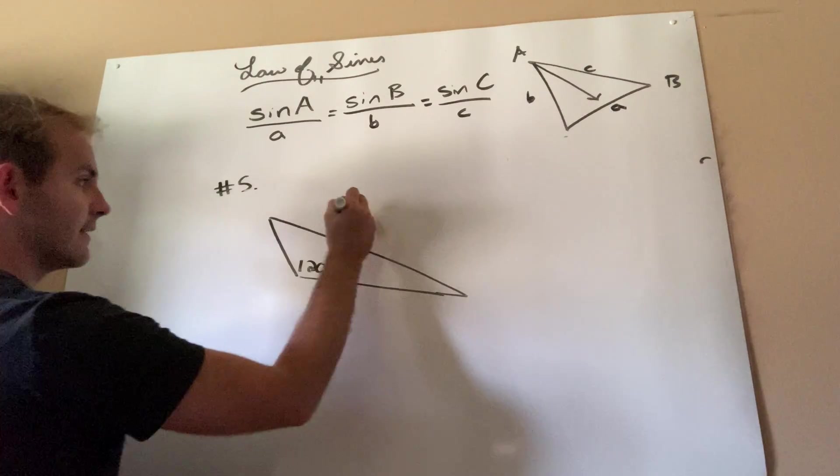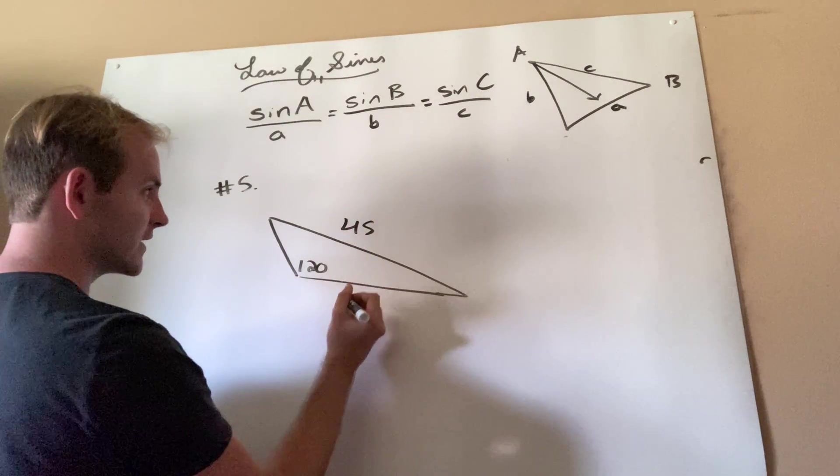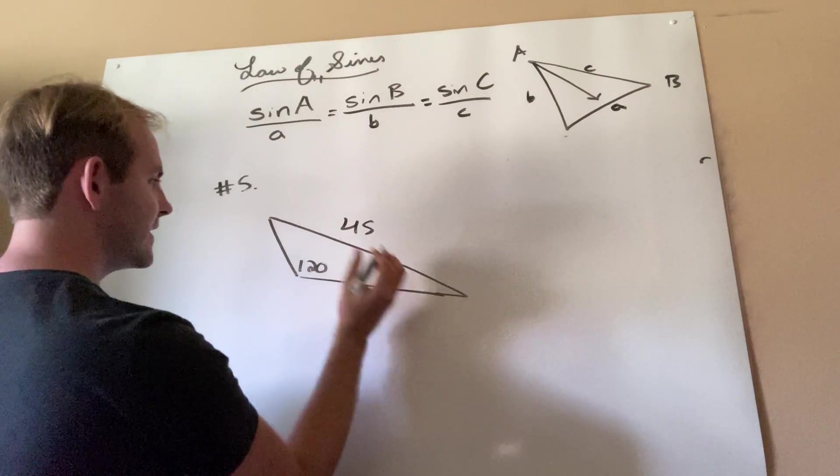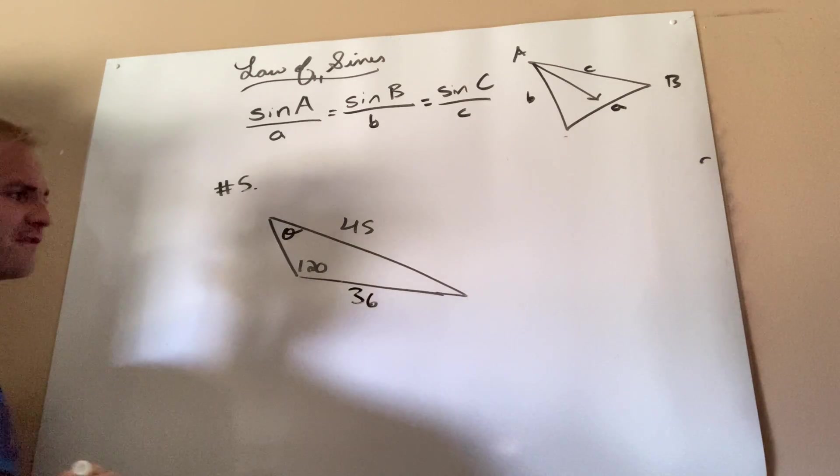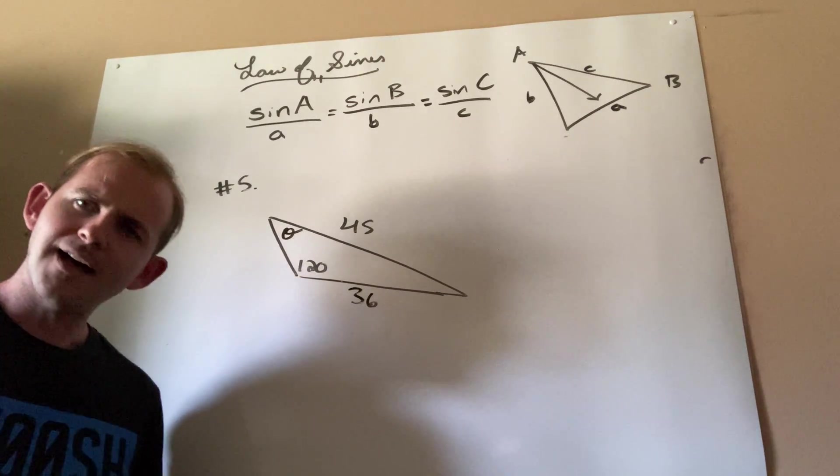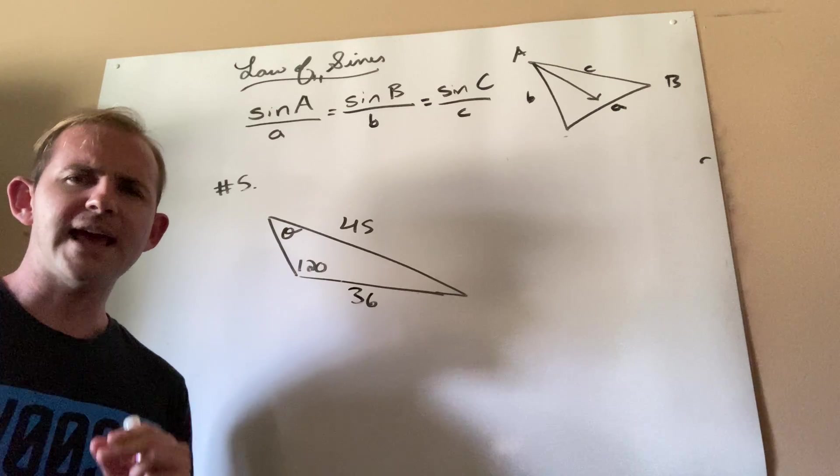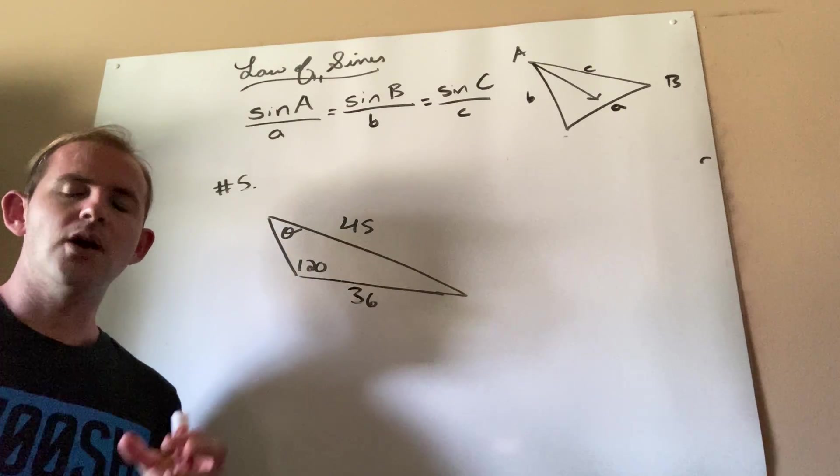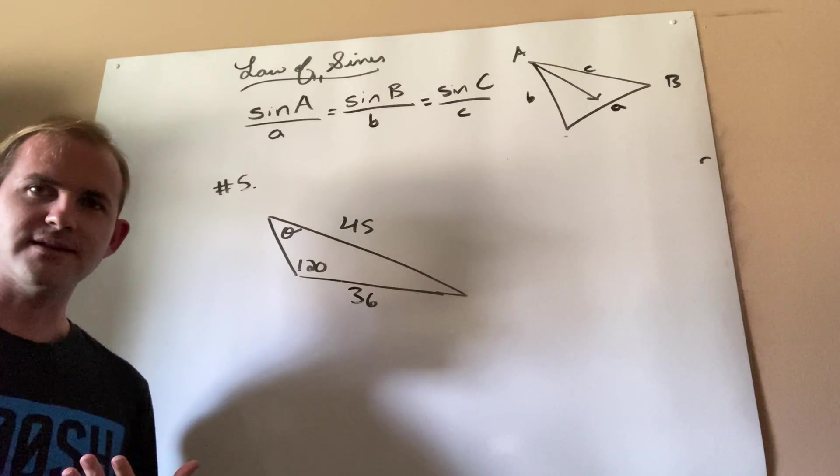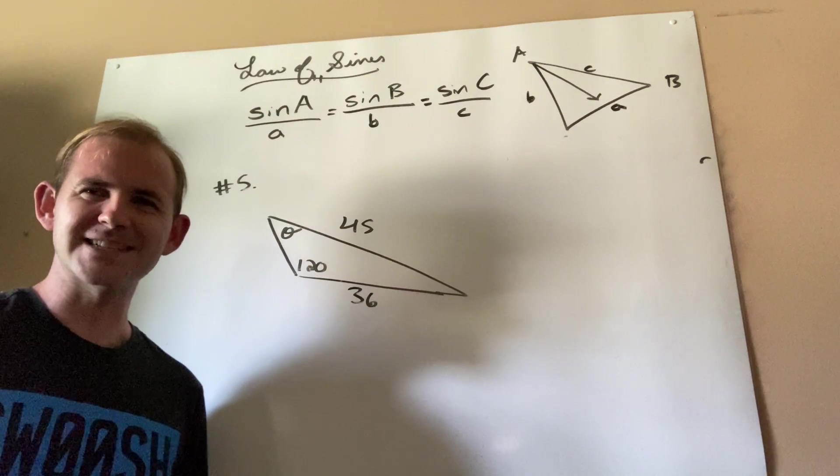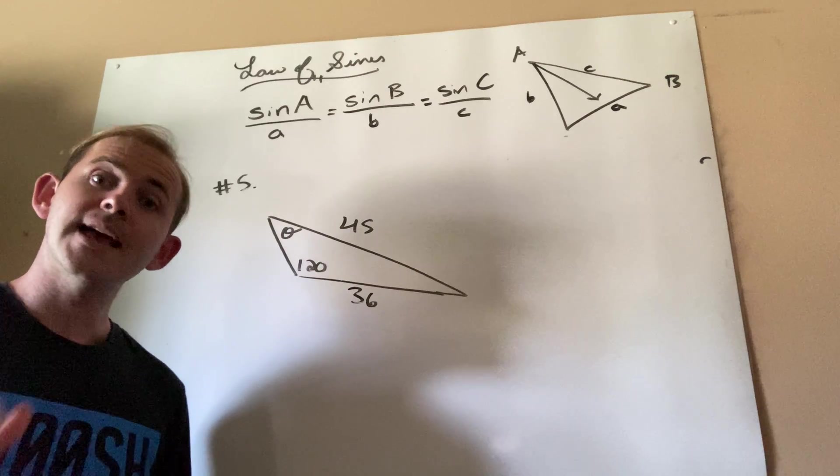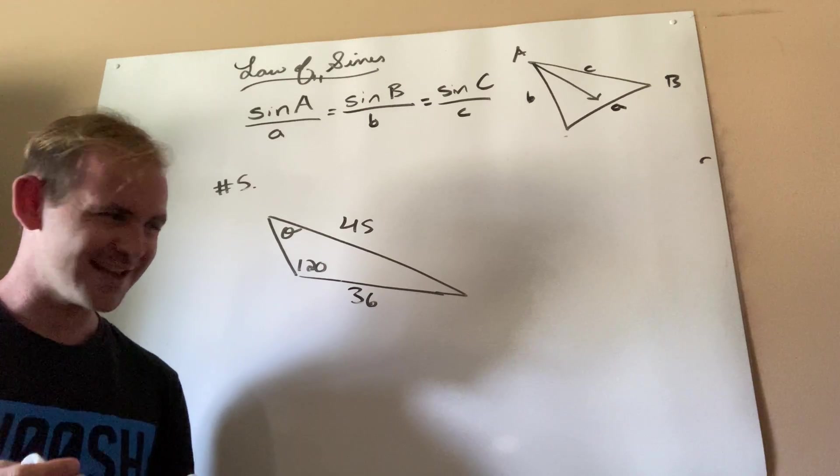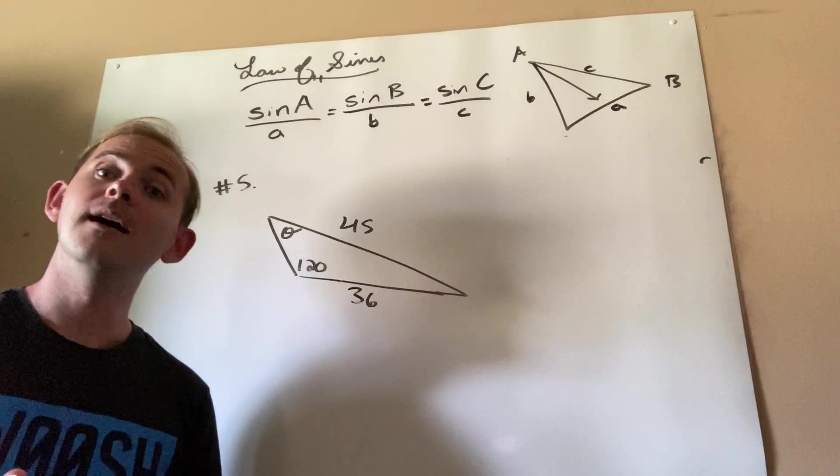We have, and this is nice, an angle side pair, 120 and 45. Now the difference is what they're asking me to find here is not a side. They're asking me to find an angle. So I just want you to keep that in mind. We're going to use exactly the same method, which means plugging into this beautiful equation up here. But at the very end, there's going to be one thing we have to remember about inverse trig, hint, hint, nudge, nudge.